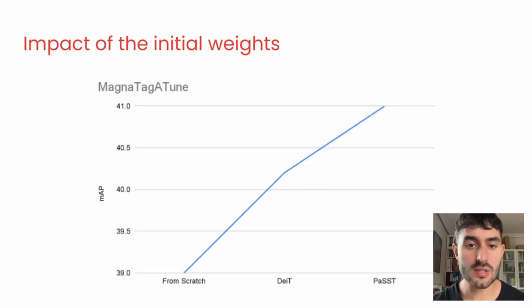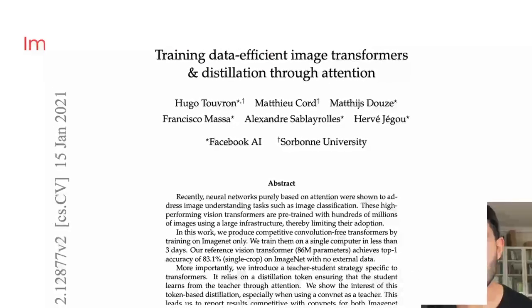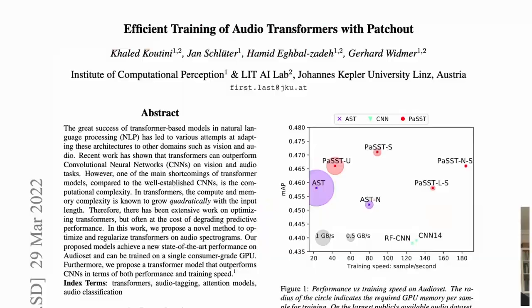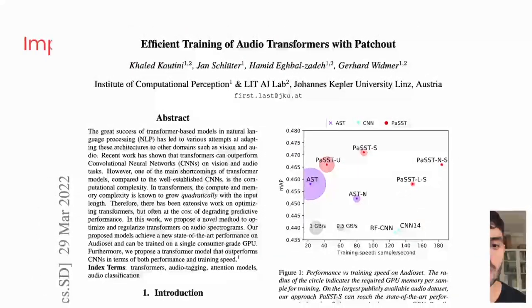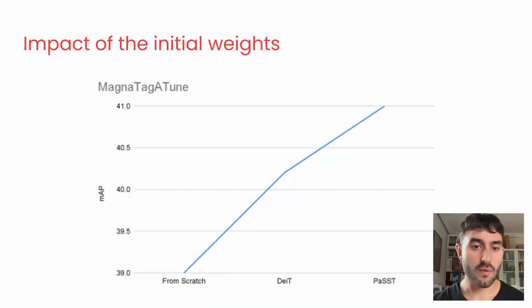In the second experiment, we consider starting our training from random weights, from the weights of DeiT, which is an image recognition model, and from the PaSST weights, a model trained on AudioSet for audio classification. We find that starting the training from the PaSST pre-trained weights produces the best performance in the downstream task.